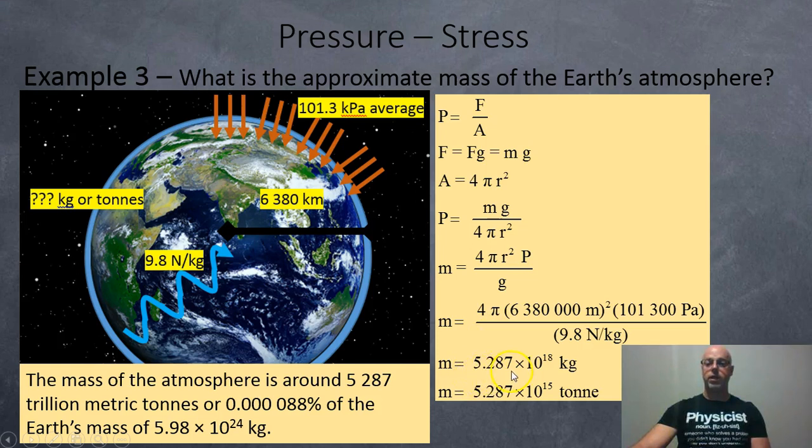So when you calculate that out, we get 5.287 times 10 to the 18 kilos. Divide by 1,000 kilos in a metric ton, and we get 5.287 times 10 to the 15. So 10 to the 12 is a trillion, that leaves 10 to the 3 left. So all together, we've got 5,287 trillion metric tons of air or atmosphere.